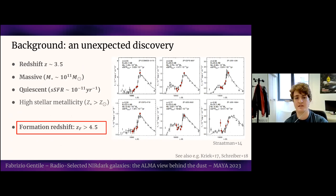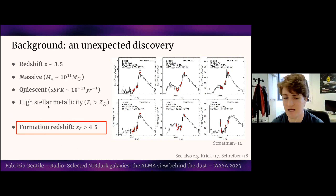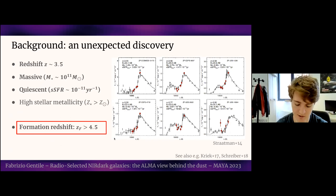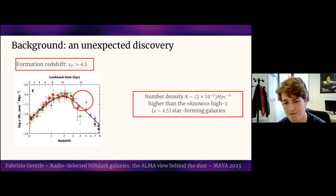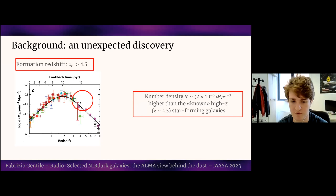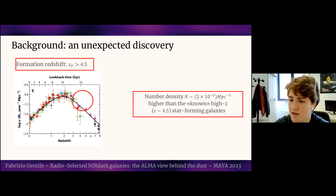But everything changed around 2014, when several collaborations started to unveil a population of massive and quiescent galaxies already in place around redshift 3.5. These galaxies should have a formation redshift above 4.5, and this is a problem for at least two reasons. First, looking at the Madau plot of star formation rate density as a function of redshift, around redshift 4.5 the universe was not creating many stars, so it is hard to search for progenitors in this region. Second, if we compute the number density of these massive galaxies at that redshift, it is at least two orders of magnitude higher than known galaxies found at redshift 4.5, meaning we are missing the progenitors of these galaxies.